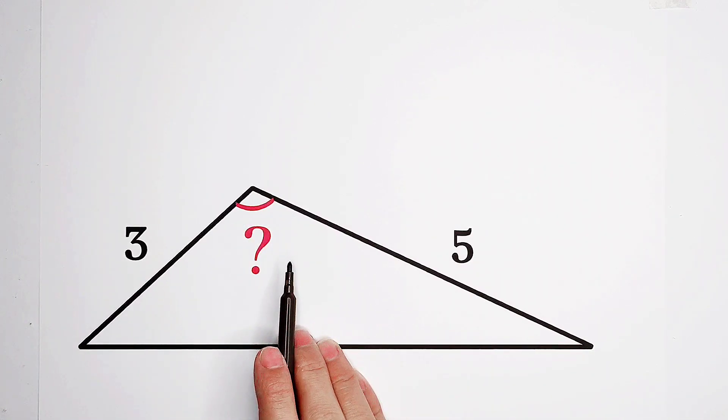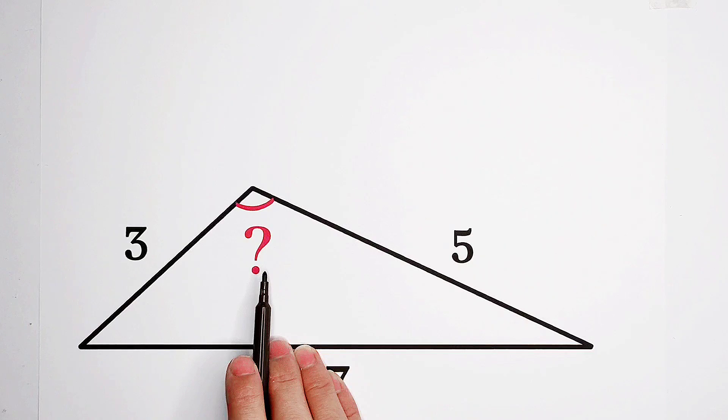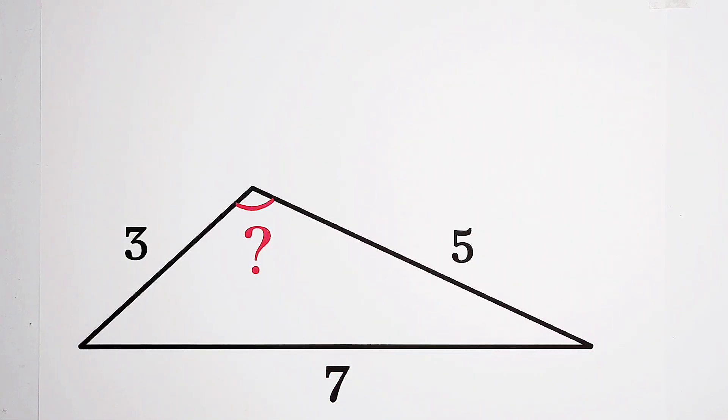Here is a triangle. Its sides measure 3, 5, and 7. How big is this angle? Now, I'm going to show you the best method to this question. However, without using the sine rule or the cosine rule. Are you ready? Let's go!